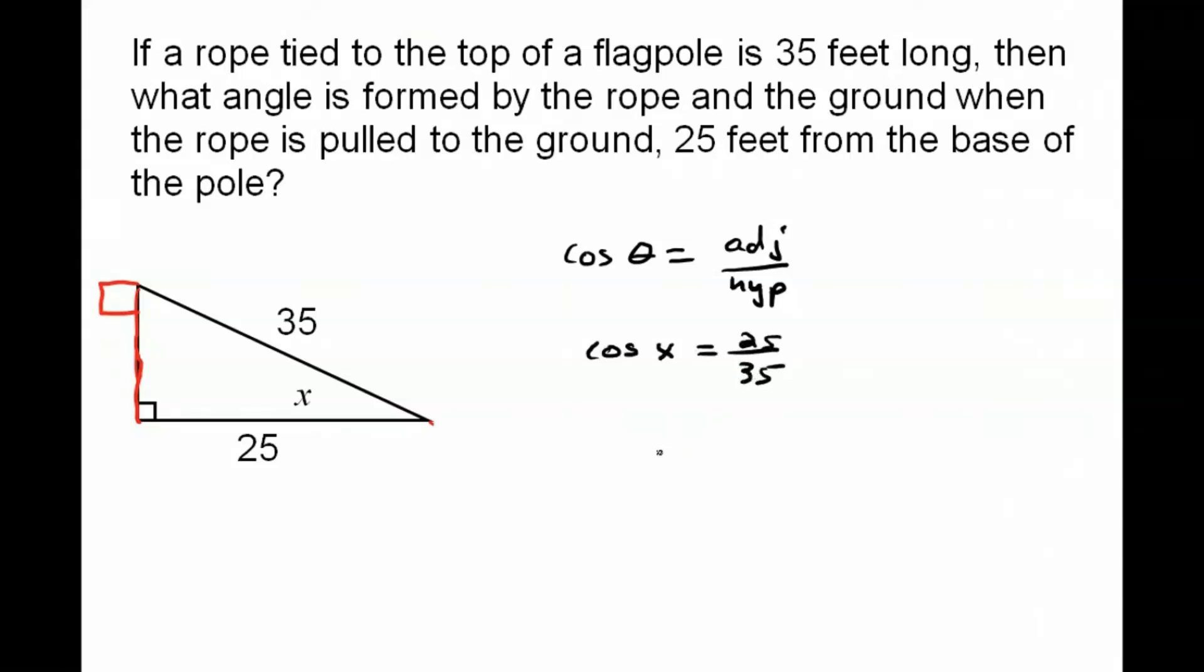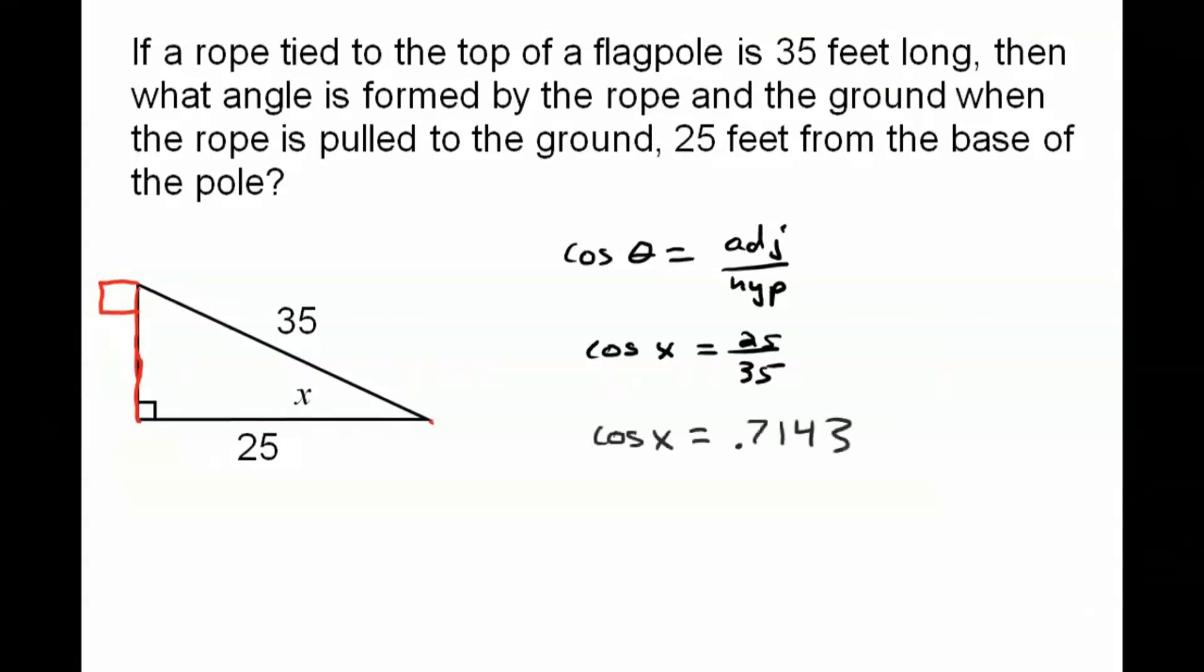I'm gonna need to put that into my calculator and see what that is. Okay, the cosine of x is 0.7143. It's customary to write trig values to four decimal places. So now I know that that's what the cosine is, so what's the angle?